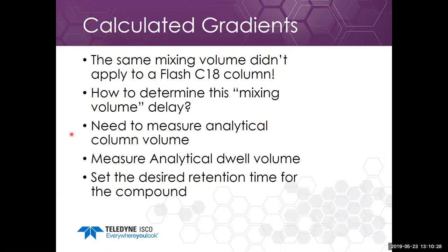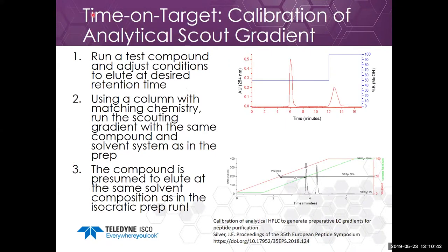So we came up with a different way of calculating these gradients called time on target. We actually calibrate the analytical scouting gradient. The first step is to run a test compound using isocratic conditions on your prep system and adjust the conditions so that the compound elutes at whatever time you want. Using a column with matching chemistry, you run whatever scouting gradient you want with the same compound and solvent system, and see where the compound elutes. The compound is presumed to elute at the same solvent composition as the isocratic prep run, so now we can determine the apparent gradient delay very easily.